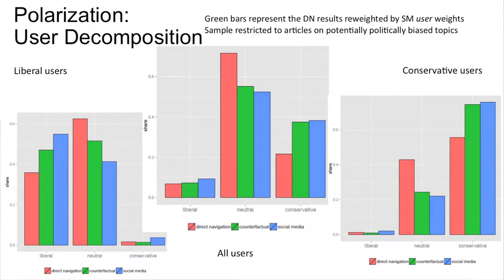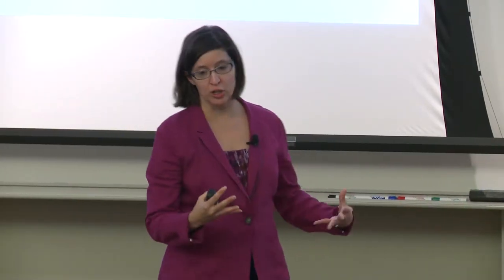For the liberal users, we see they are mainly reading liberal stuff through social media — they're hardly reading any conservative stuff at all through social media or direct navigation for that matter. But social media is even more skewed: if you're liberal and going to social media, it's really going to be stuff in your affinity.